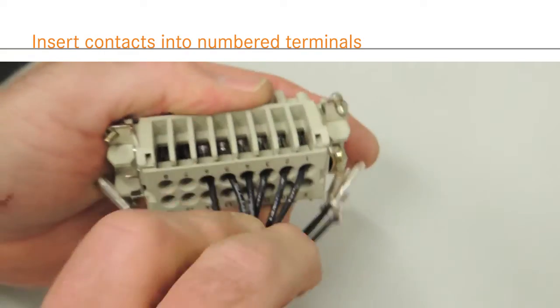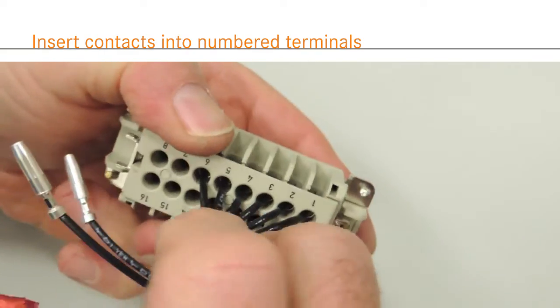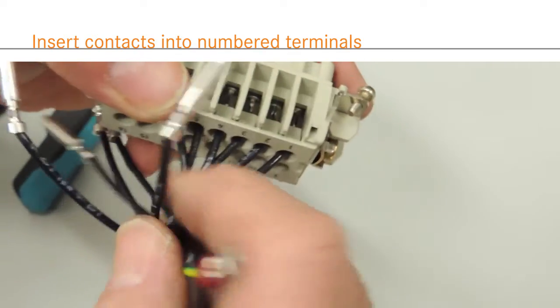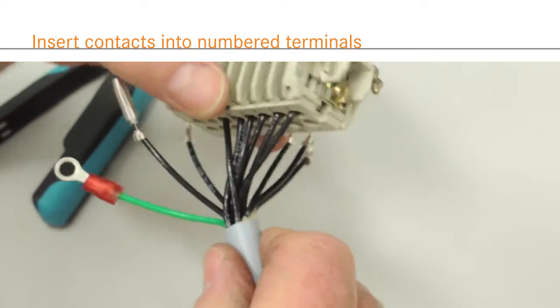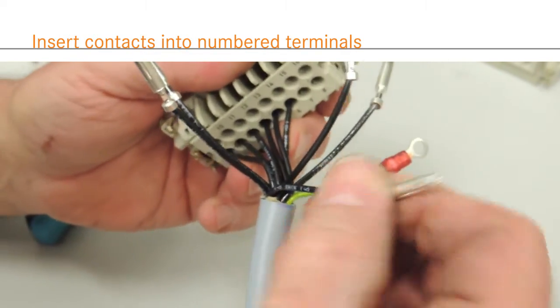To wire a crimp terminated insert, simply insert the terminated conductor into the correctly numbered wire terminal and push the contact into place. Both conductors and terminals are sequentially numbered for consistent wiring.